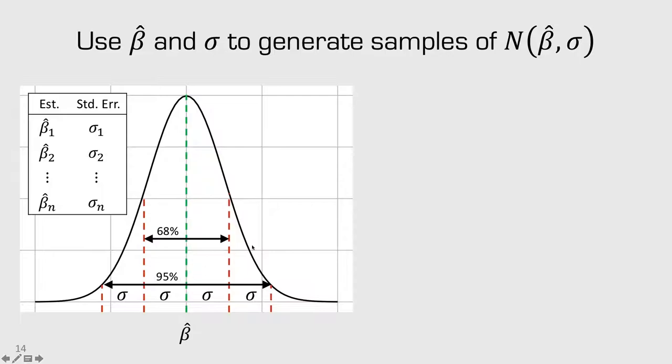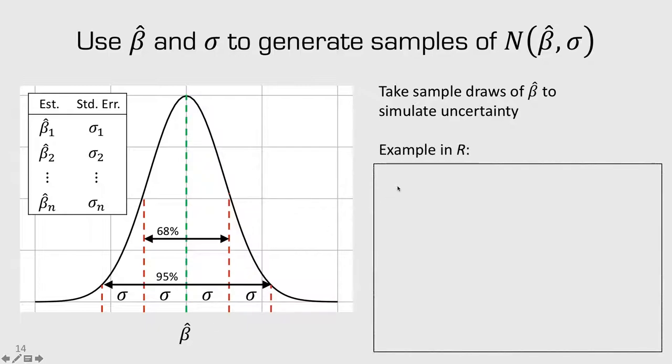Another way we can compute this confidence interval is by taking sample draws of our coefficient to simulate the uncertainty. So, for example, let's say we have a coefficient of 0.5, and sigma is 0.1. Well, we can draw samples from a normal distribution of these parameters using the rnorm function.